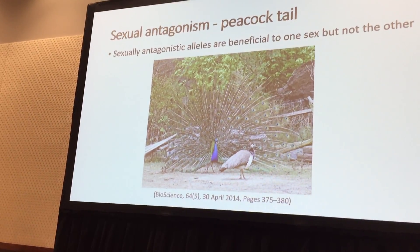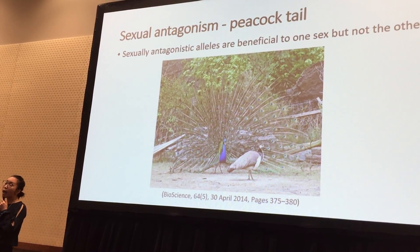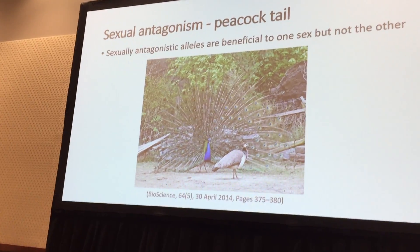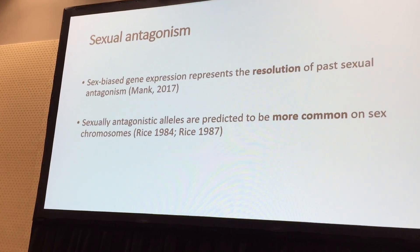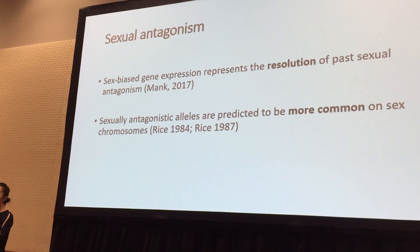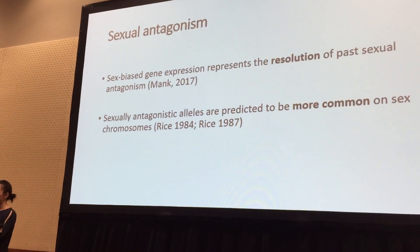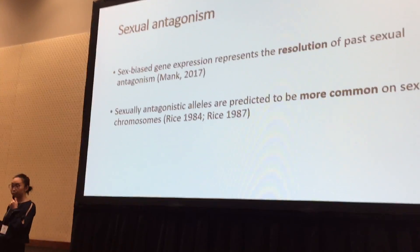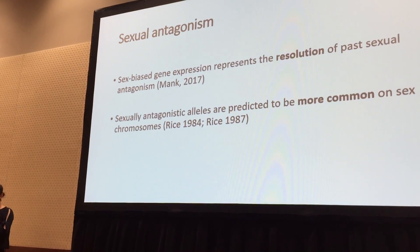The peacock tail is an example of sexual antagonism, where a trait or a gene allele is beneficial for one sex but not for the other. However, with the nearly identical genome shared between male and female, females must also have the gene responsible for that trait. One solution to resolve this sexual conflict is to have different expression levels of those genes in females so that the trait in females can be suppressed. Hence, sex-biased gene expression represents the resolution of past sexual antagonisms.